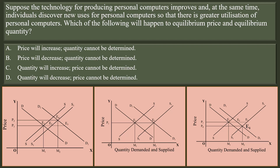In the third case, look at the graph given at the right extreme. Increase in demand is less than increase in supply. The price falls from P1 to P0, but quantity increases from M1 to M2. If you examine all three cases, the movement of price is unpredictable and uncertain. But one thing is certain — that is the increase in quantity. Whatever be the extent of increase in demand and supply, the quantity increases. So our option C is absolutely right: quantity will increase, price cannot be determined.